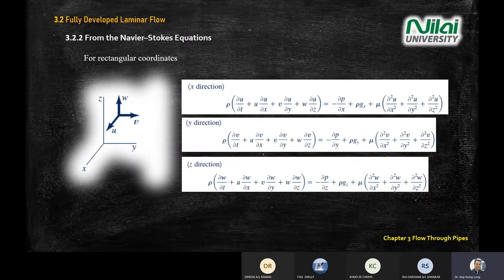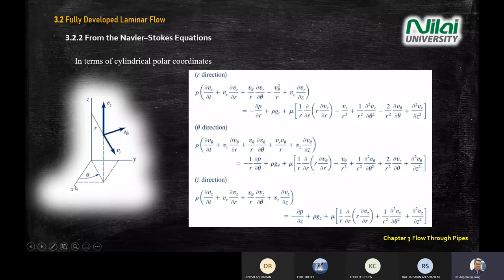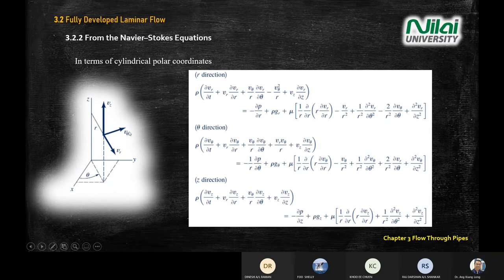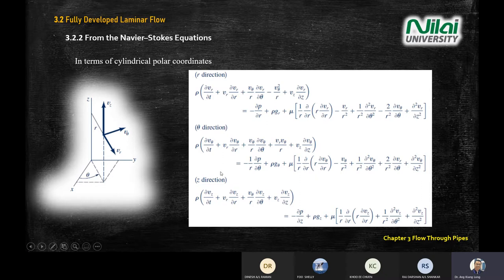Navier-Stokes equations can also be defined in cylindrical polar coordinates. As you can see, even though the axes are x, y, and z, the locations are defined by theta and r from the axis. So here you will be seeing vr, v-theta, and vz — three axes: one in terms of location from the axis r, theta from the x-axis, and z-direction. There's a change of format for the Navier-Stokes equation. It's also a lengthy derivation process, but for this session I'll just give you the final equation.